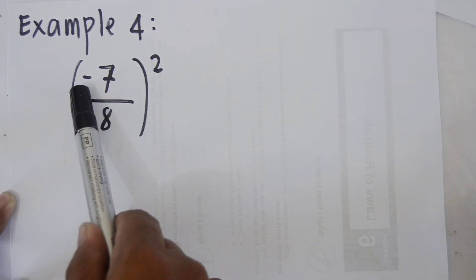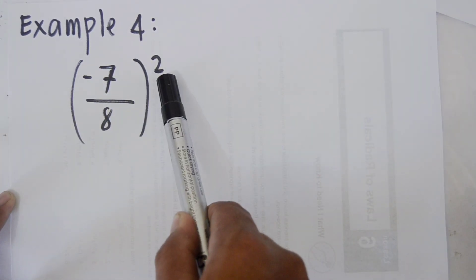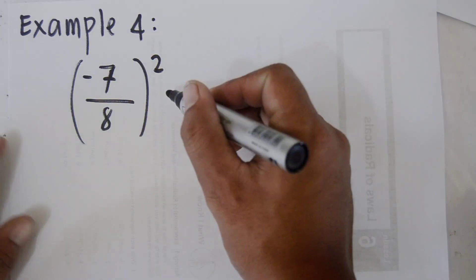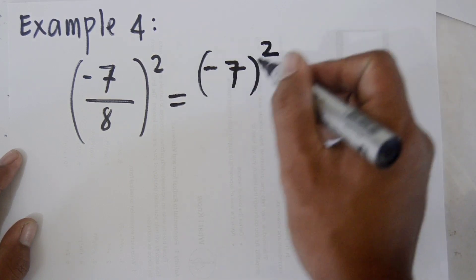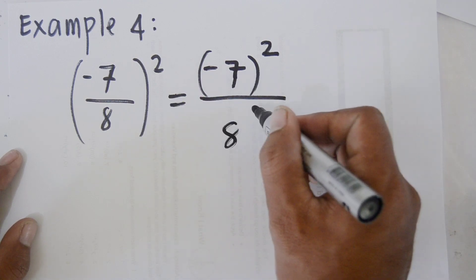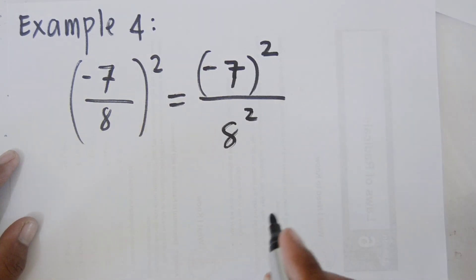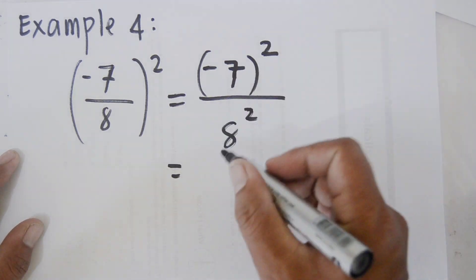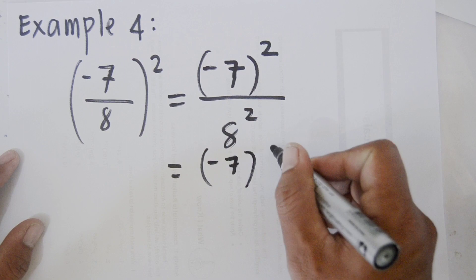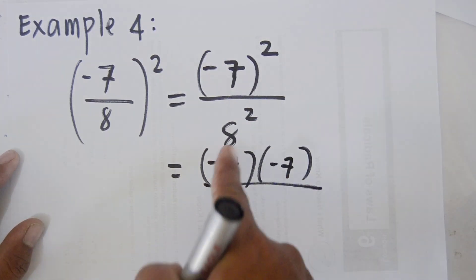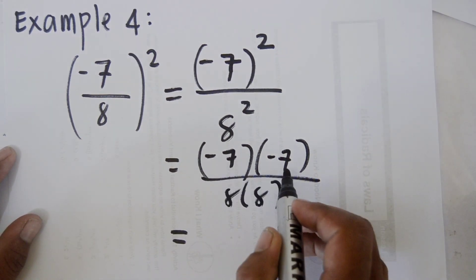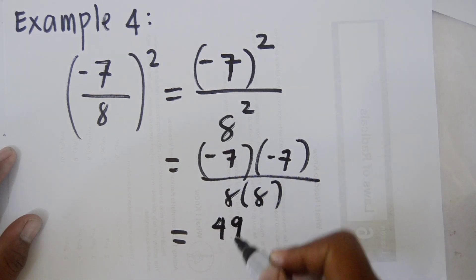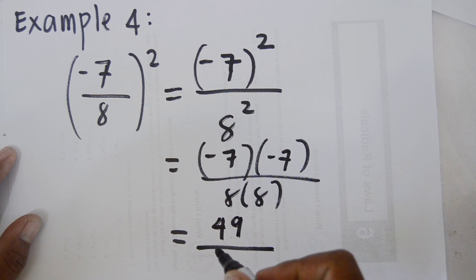Example number 4: the quantity of negative 7 over 8 raised to the power of 2. Distribute 2 to each term. We have negative 7 raised to the power of 2 over 8 raised to the power of 2. Simplify: negative 7 squared is negative 7 times negative 7, which equals positive 49. In the denominator, 8 times 8 equals 64.